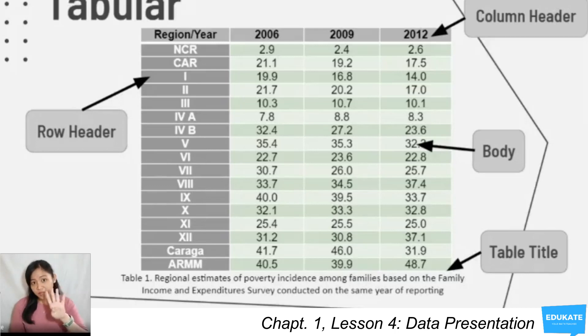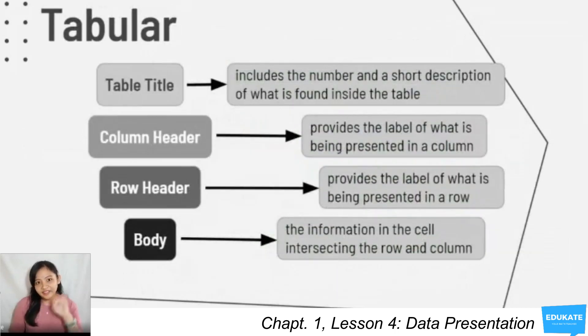Let's move on to these four table parts: table title, column header, row header, and body. In the table title, you can see the number and a short description of what is found inside the table. Column header provides the label of what is being presented in a column. The body shows the information in the cell intersecting the row and column. In general, a table should have at least three rows and or three columns. This example was taken from 2015 Philippine Statistics in Brief, a regular publication of the PSA, which is also the basis for the example of the textual presentation given above.